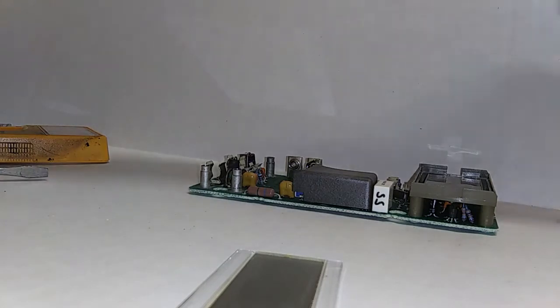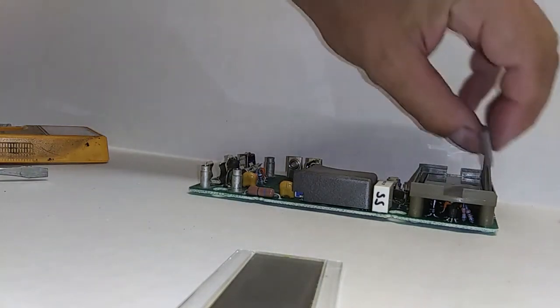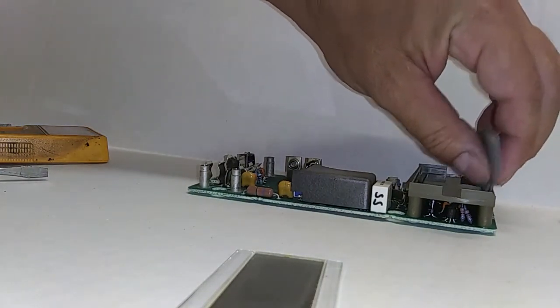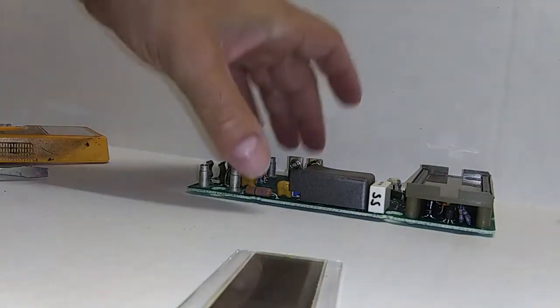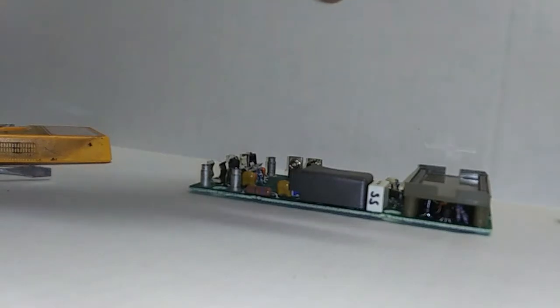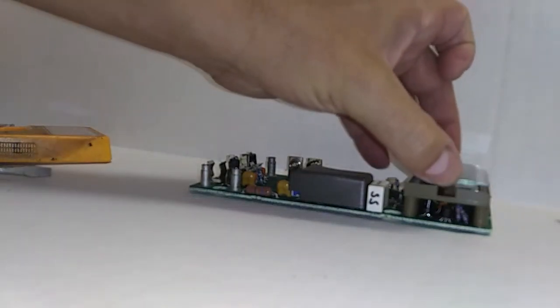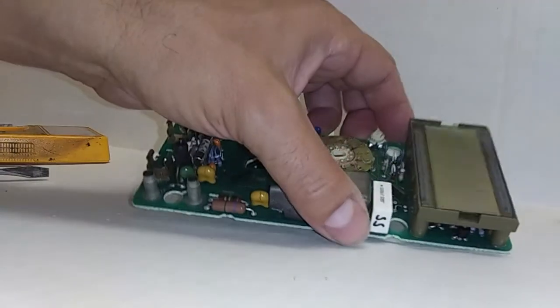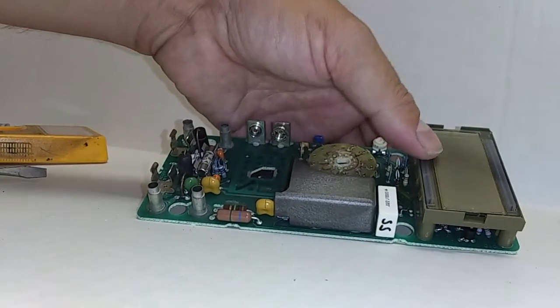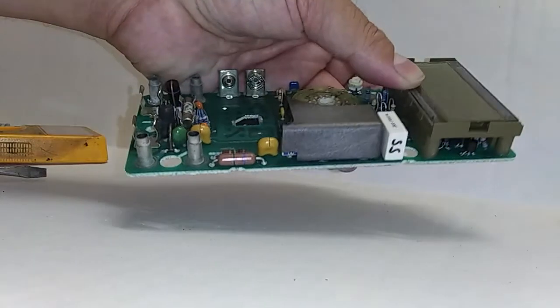All we're going to do now is drop in the new elastomers, just pop in there in place. And we are going to reseat the LCD, just place those over. Always make sure that you don't have your LCD in upside down.